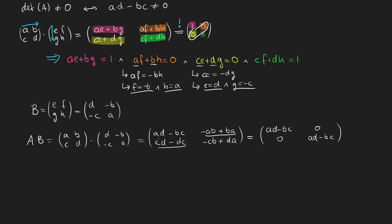And as you might notice, the top left entry also equals the bottom right entry. So A times B is the matrix AD minus BC, 0, 0, and AD minus BC again.